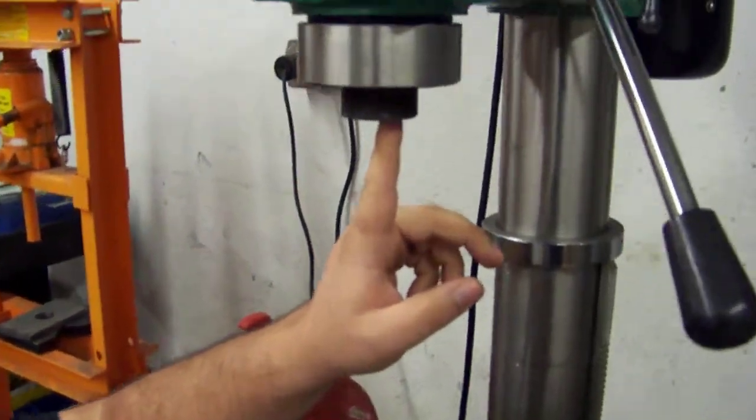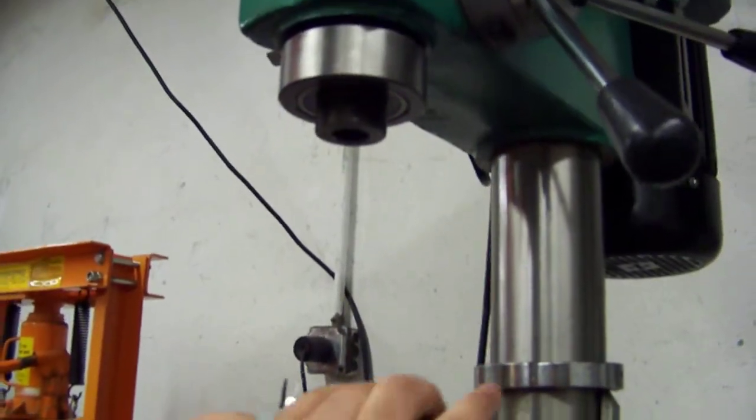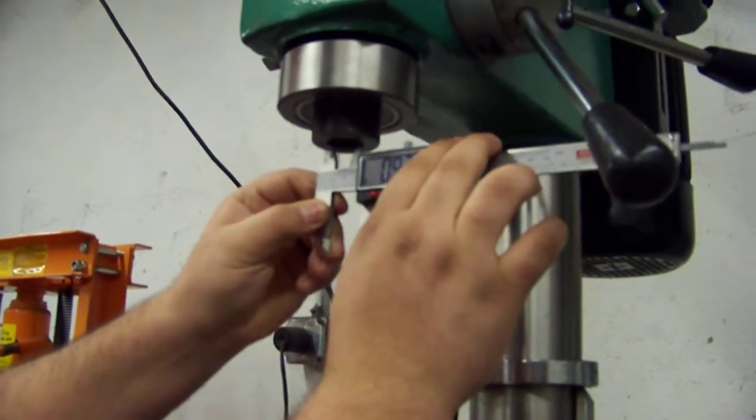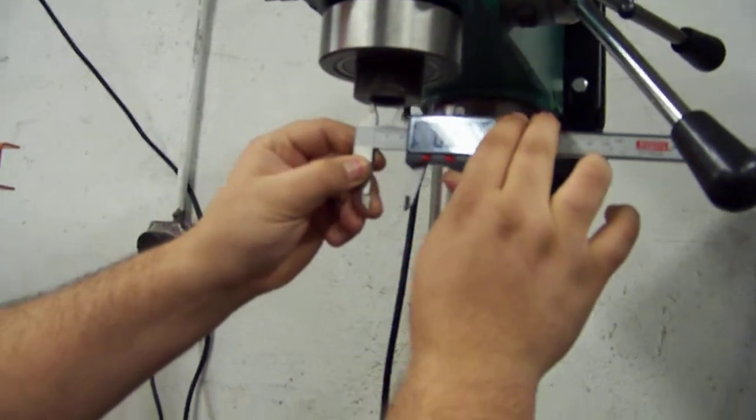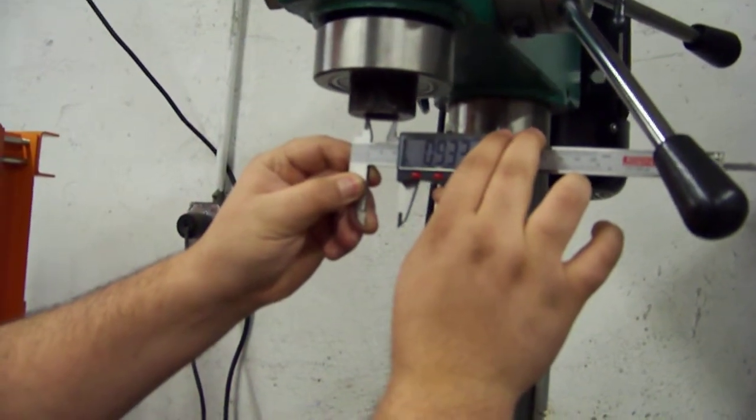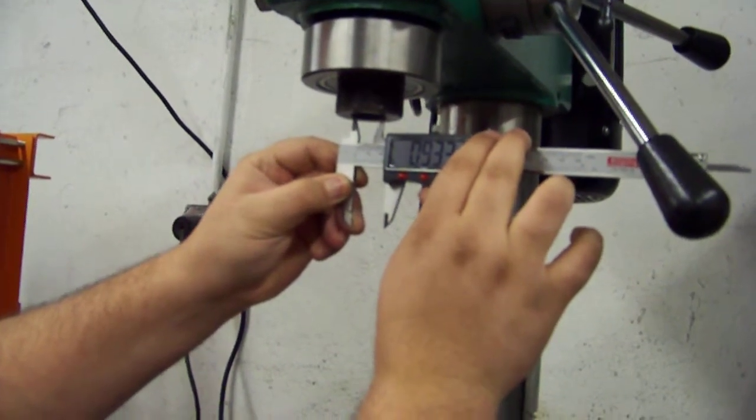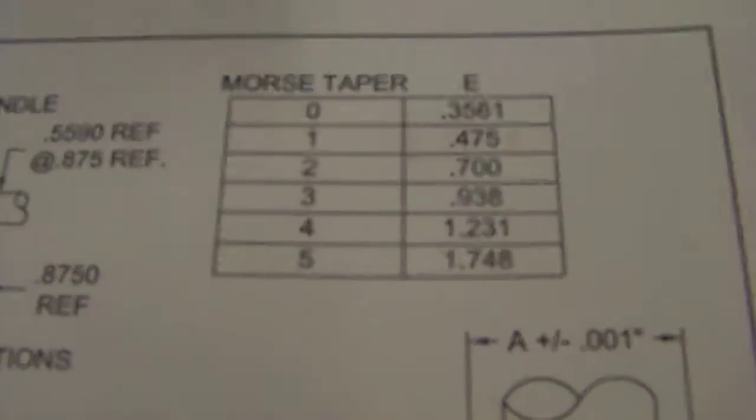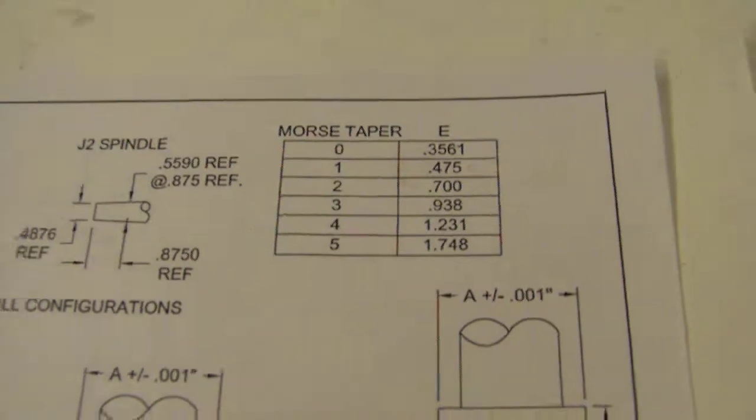When trying to determine what size Morse taper you have, simply place the caliper right underneath here and that will provide you with a dimension relatively close to what is needed for the Morse taper. We have here 0.933. If you look to our chart, you'll see that it's 0.938 as a Morse taper number 3. So you'll be able to use our charts to determine which Morse taper your machine is.